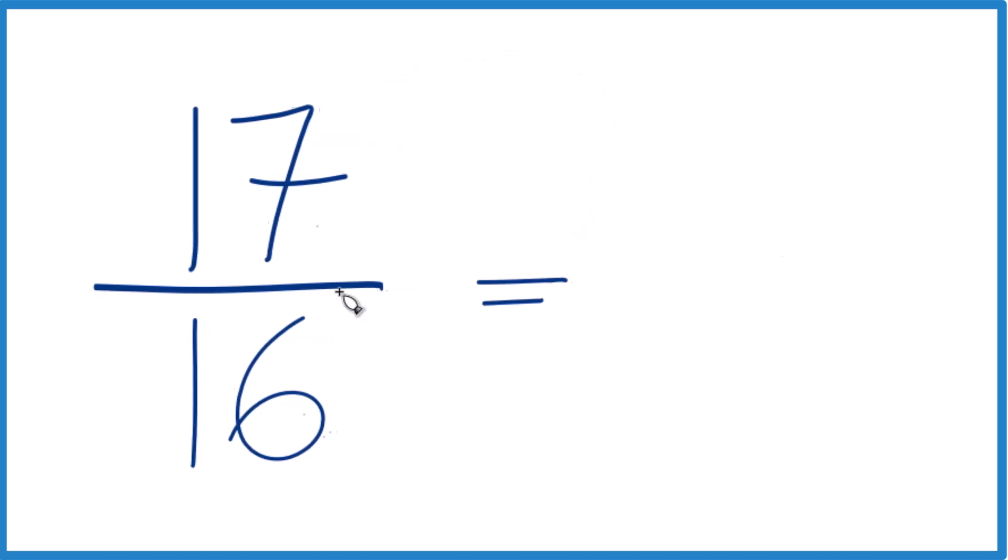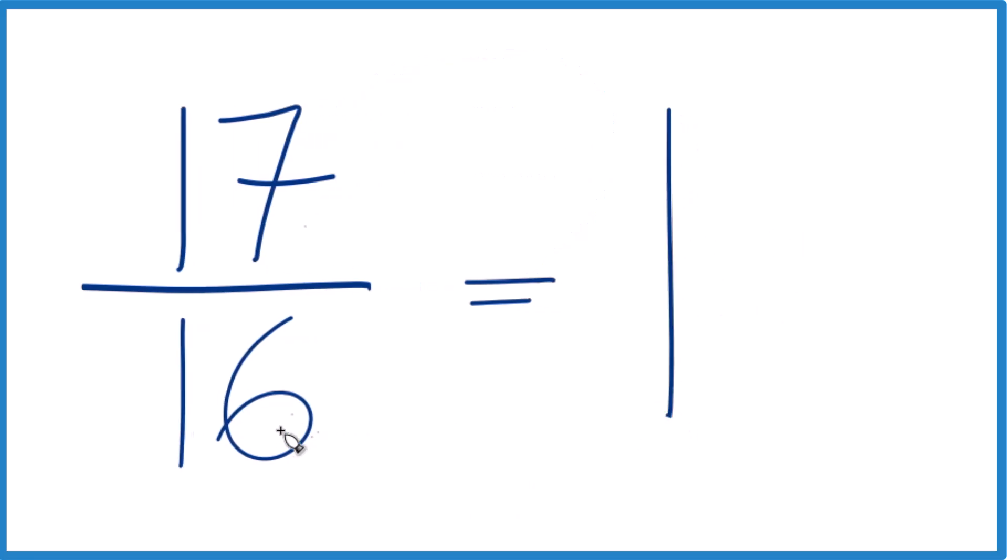16 goes into 17. 1 times 16 is 16, and then you'd have 1 left over. Then you bring this 16 here across, and 17 sixteenths equals 1 and 1 sixteenth.